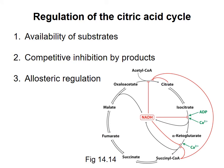Regulation of the pathway is similar to the other pathways that we have talked about. The cycle is promoted by the availability of substrates. Some of the enzymes are competitively inhibited by their products, and some enzymes are allosterically regulated. A high ATP concentration means that the cell is low in available energy and the cycle is activated at this step. Calcium is a signal that the cell should produce ATP, and so calcium activates two of the enzymes. High concentrations of NADH and succinyl-CoA mean that the cycle should slow down. You don't need to remember the details of the regulation, just as long as you remember the principles of why the cycle should be activated or inhibited.